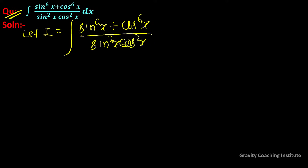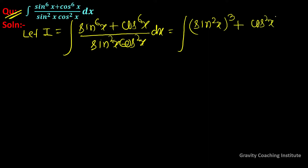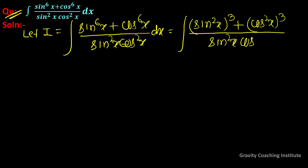So equal to integration, और इसमें हम सबसे पहले इसको ऐसे लेते हैं: (sin²x)³ + (cos²x)³ upon sin²x · cos²x dx. और इसमें हम identity use करेंगे।